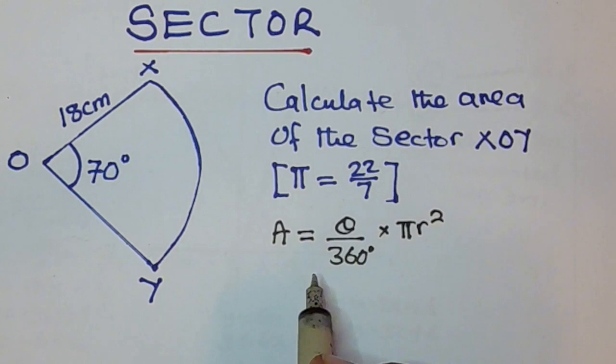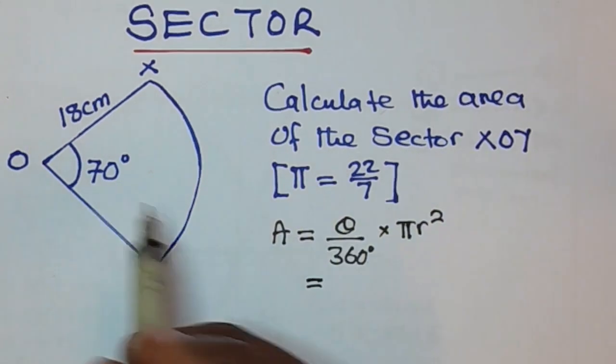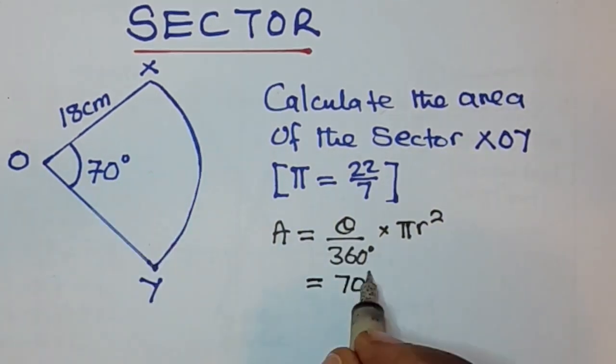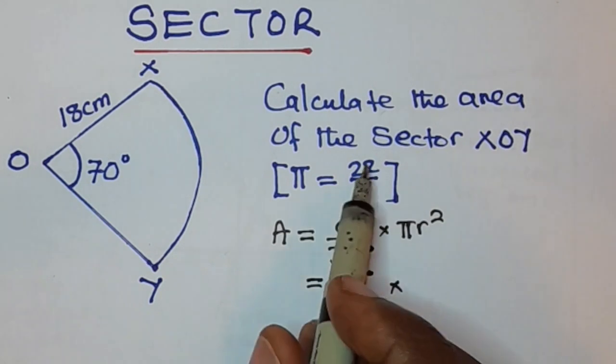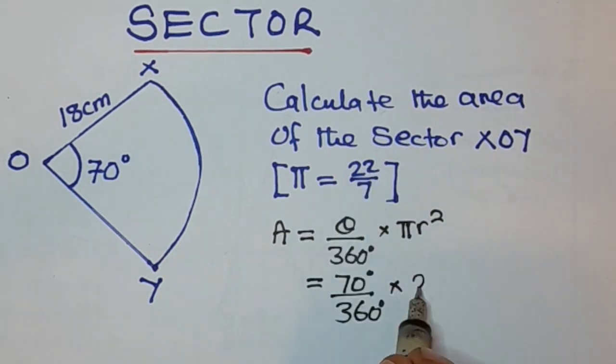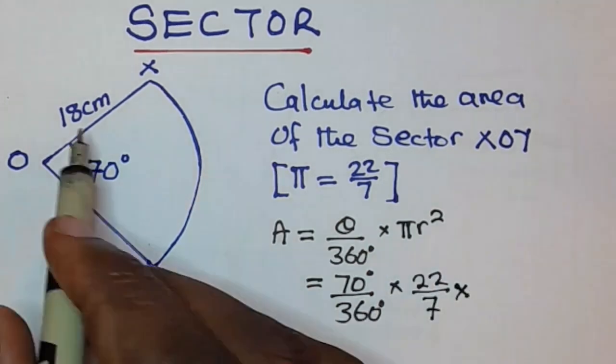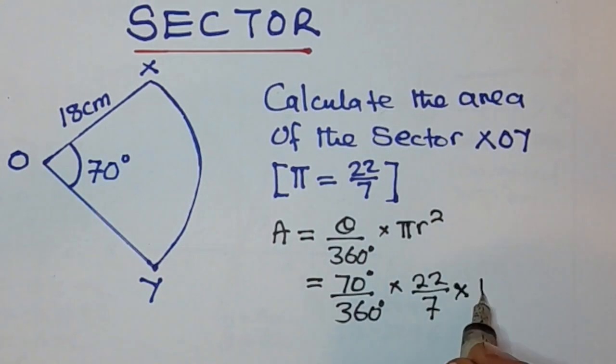So we substitute theta here. The central angle is 70 degrees over 360 degrees times pi. We've been told to take pi as 22 over 7, times the radius is 18, so we have 18 squared.